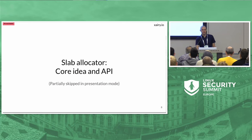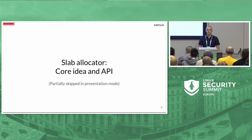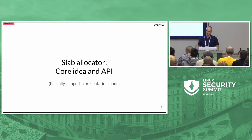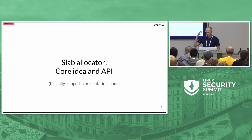The second part I'm going to partially skip is the description of the slab allocator API. If you know that there is a kmalloc function that allocates memory, a kfree function that frees memory, and you know the difference between common kmalloc caches versus caches created for specific types, then you know everything that I'm going to skip.